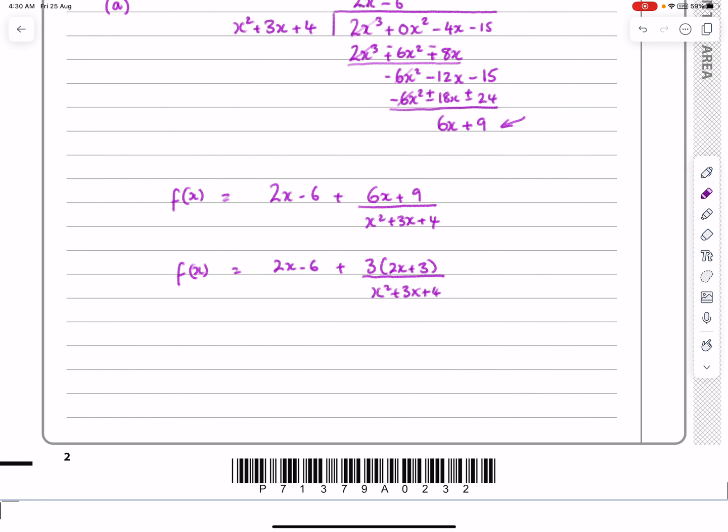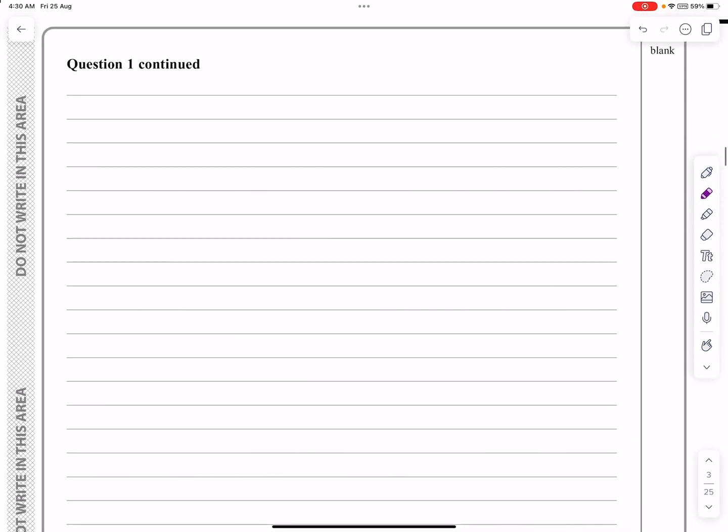OK, let's move on to part b then. Part b says, can we do the integral of fx between 3 and 5? So what I'm going to do is I'm going to integrate the new format, which is 2x minus 6 plus 3 times 2x plus 3, all over x squared plus 3x plus 4 dx.